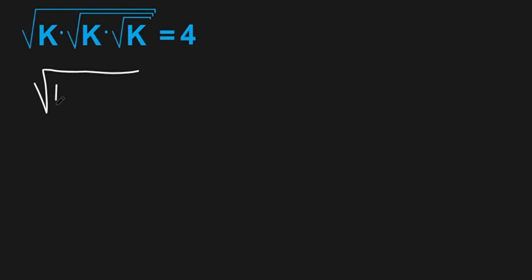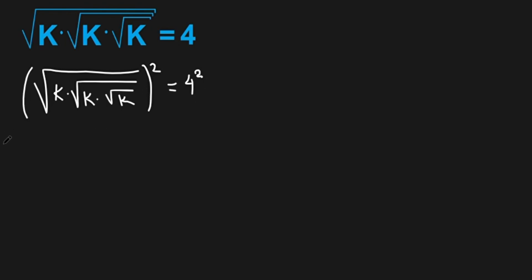So what I'm going to do, I'm going to raise both sides by 2. So we have square root of k, times square root of k, times square root of k, to the power of 2, equals to 4 to the power of 2. And we have k, times — here we can eliminate — square root of k, times square root of k, equals to 4 squared.